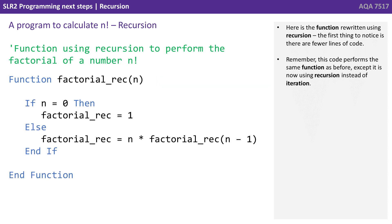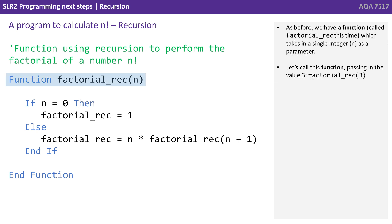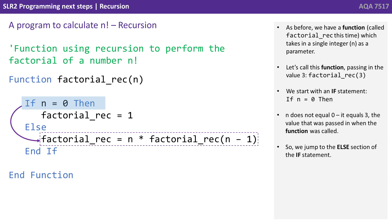Here's the function rewritten, this time using recursion. The first thing to notice is there are fewer lines of code, but this code performs the same function as before, except it's now using recursion instead of iteration. As before, we have a function called factorial_rec which takes in a single integer n as a parameter. Let's call this function passing in the value 3, just like we did before. We start with an if statement: if n equals 0. Well, n doesn't equal 0 — it equals 3, the value that was passed in — so we jump to the else section.